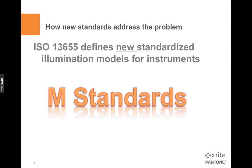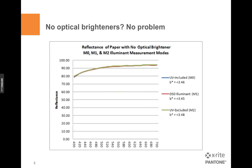This new edition of 13655 defines much more standardized illuminants inside of the devices, and it also tries to cover both historical conditions as well as make some room for the future. Back in previous years, papers didn't have a lot of optical brighteners, and when papers have little or no optical brighteners, it didn't really matter what you illuminate with. Looking at a spectral curve, whether I measure it with M0 — which is a tungsten source — a daylight source, or even cutting all the UV out, we essentially get the same curve and the same measurement look for the paper.